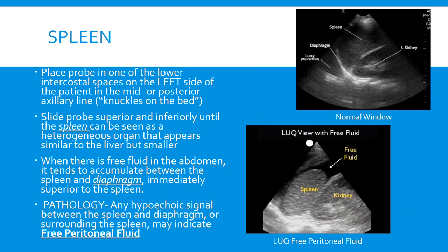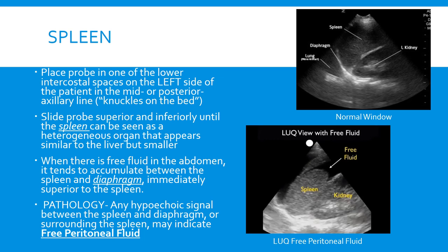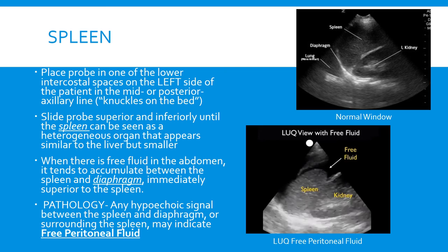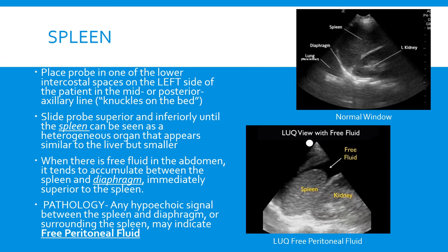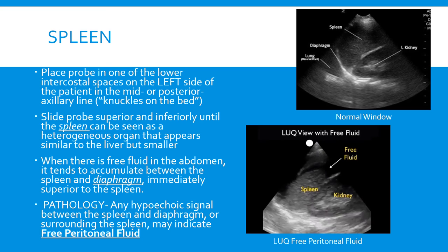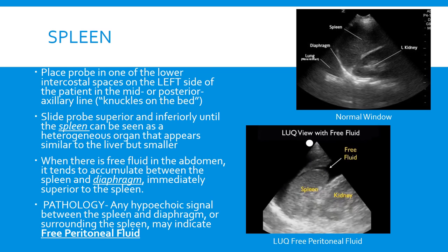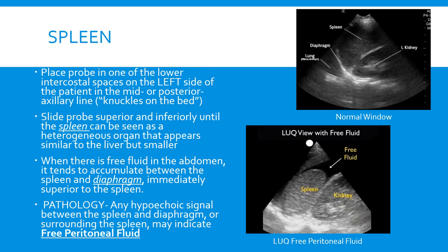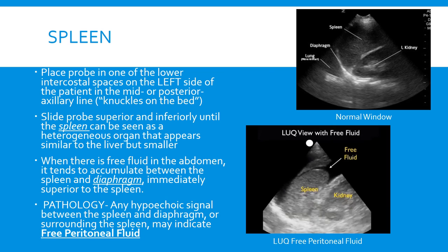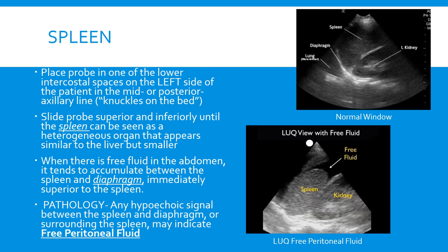Now we're going to move the probe to the left side of the patient to take a look at the spleen. We place the probe similarly to how we placed it for the liver, only on the left side — mid or posterior axillary line, knuckles on the bed. When looking for free fluid around the spleen, fluid tends to accumulate above the spleen between the spleen and the diaphragm, which is different from the liver where it accumulates between the liver and the kidney.